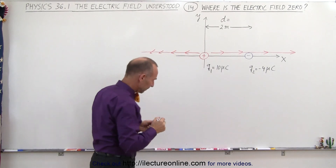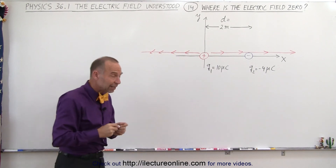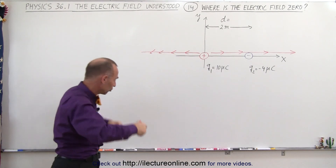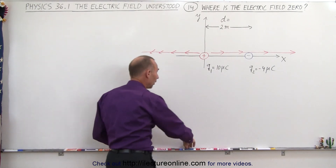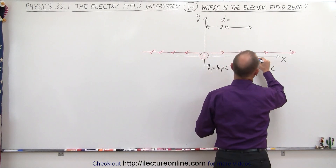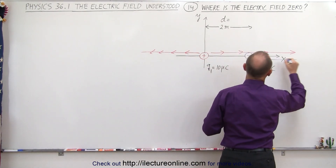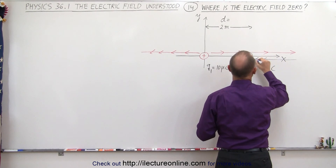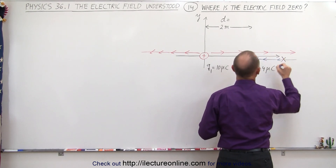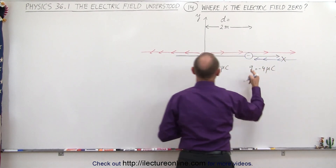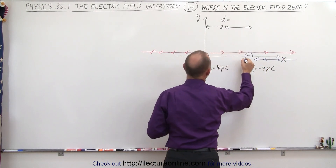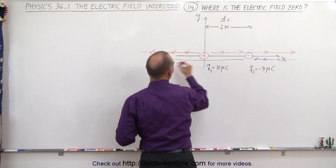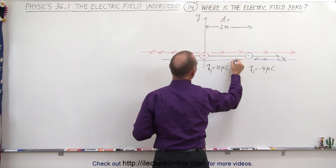Now for the negative charge, the electric field is directed towards the charge. So on the right side, the electric field will be pointing towards the charge, and on the left side, the electric field will also be pointing towards the charge.